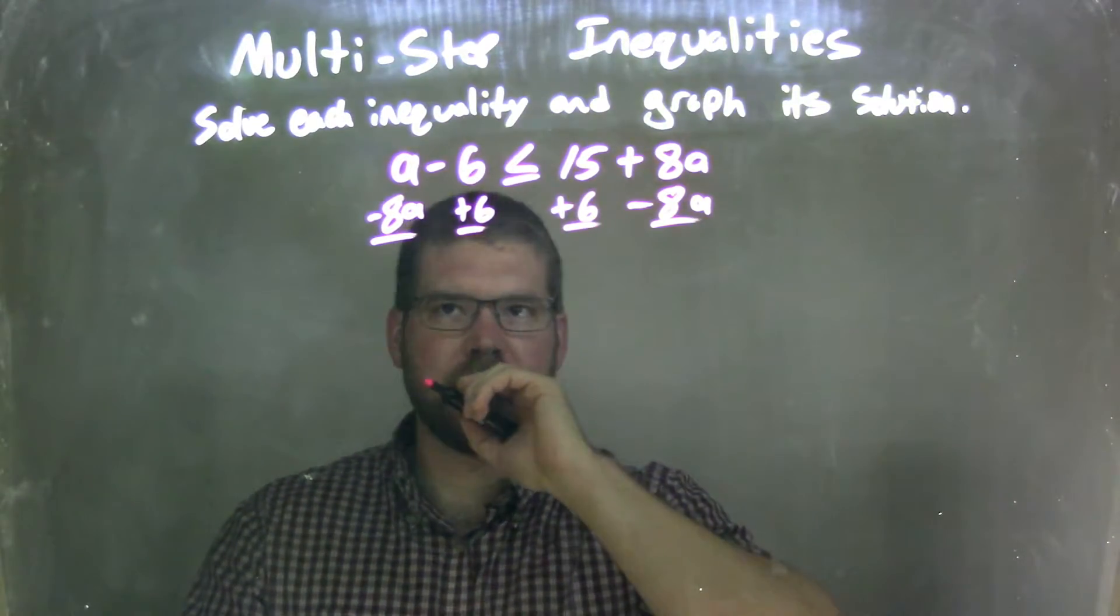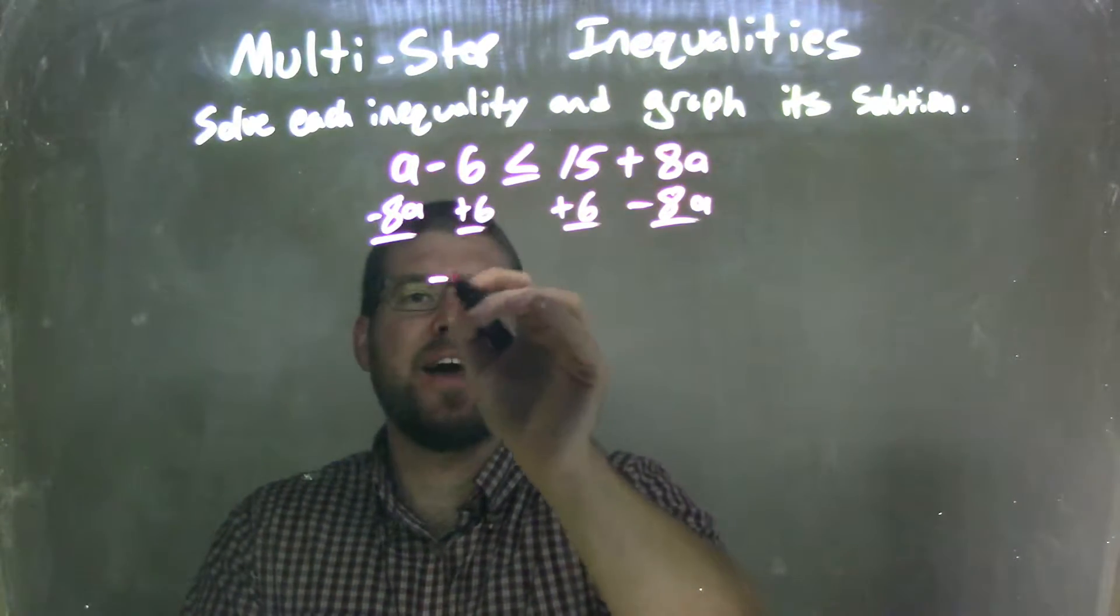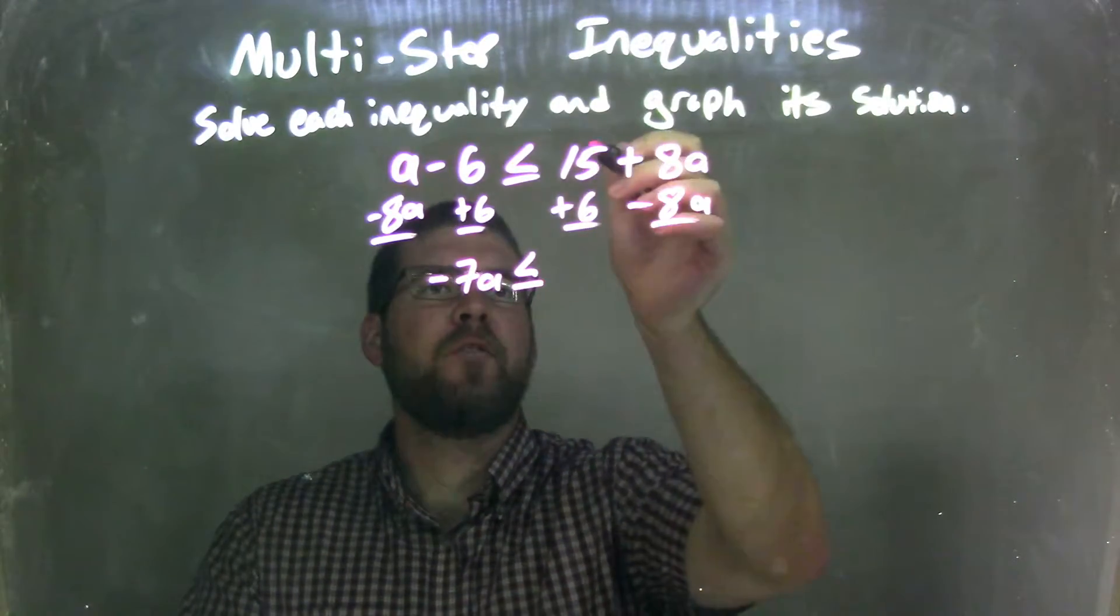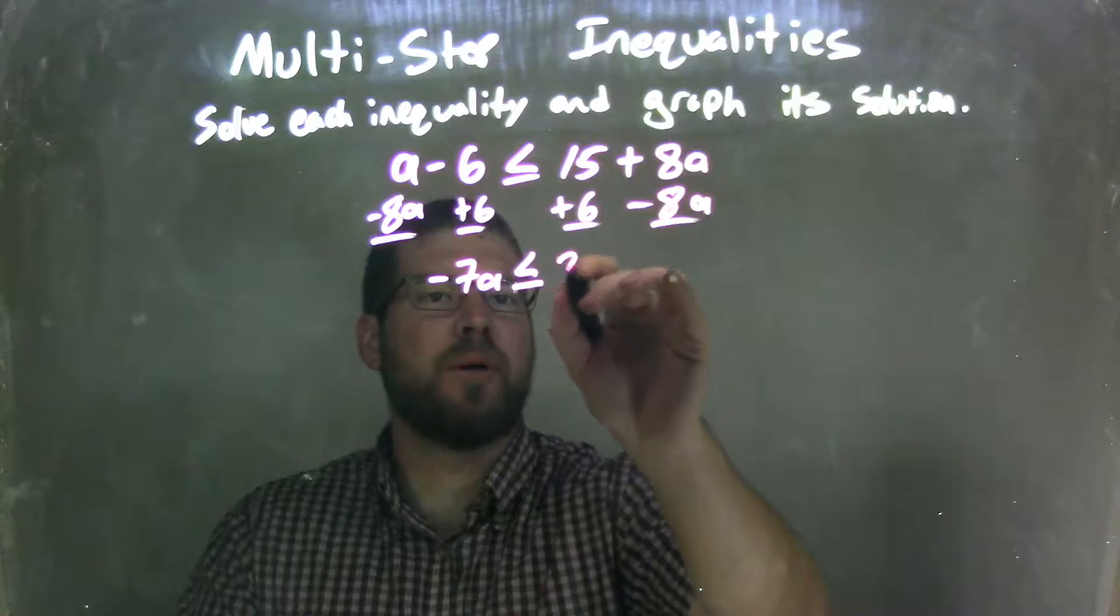And what that does, a minus 8a is negative 7a is less than or equal to 15 plus 6 which is 21.